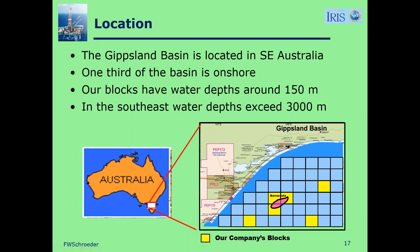For location, yellow indicates our company's blocks. Barracuda is the prospect I'm going to be showing them, so they can get a good feel for where we are and what we're talking about. Water depth is about 150 meters in the area of the Barracuda prospect.